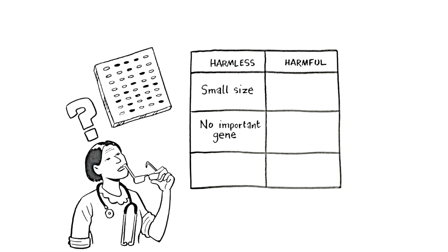When a CNV is inherited from a healthy parent, then it is likely to be harmless. But when a CNV has started new in a child, then it may be harmful. CNVs where a large chunk of genetic material is lost tend to be more harmful than CNVs where there is a gain in genetic material.